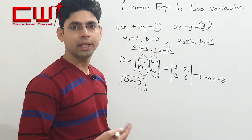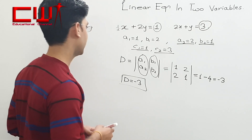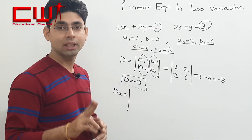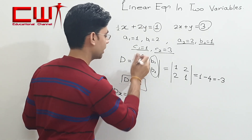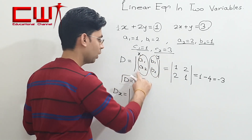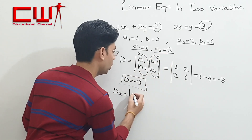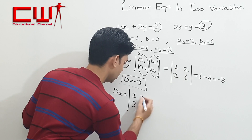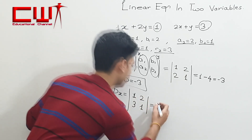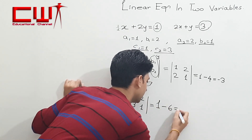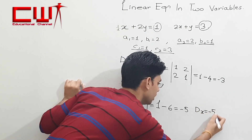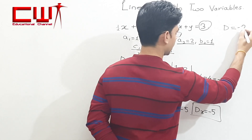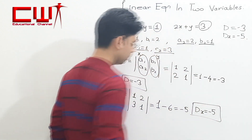अब determinant Dx और Dy निकालना है। Dx निकालते हैं — जब Dx निकालते हैं तो x के coefficients को C1 और C2 से replace कर देते हैं। तो a1 की जगह C1 यानी 1, a2 की जगह C2 यानी 3 आएगा, और b1, b2 as it is रहेंगे: 2 and 1. Solve करें: 1×1 = 1, minus 3×2 = 6, तो Dx = −5.